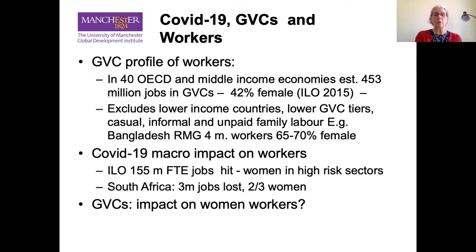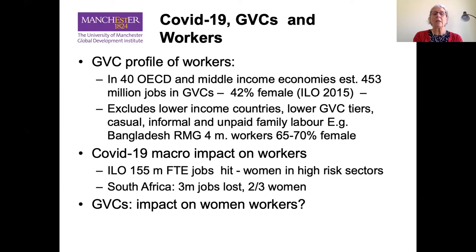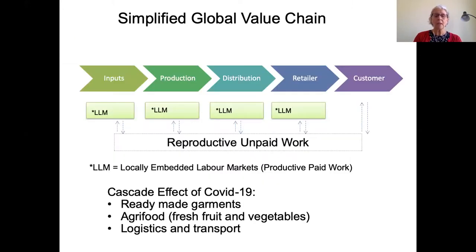COVID has had a big macro impact on workers. The ILO estimates that 155 million full-time equivalent jobs have been affected globally, and that women are particularly in high-risk sectors and are therefore being disproportionately affected. Very recent research from the University of Cape Town shows that nationally in South Africa, 3 million jobs have been lost or directly affected and two-thirds of those — 2 million — are women. But it's very difficult to get data specifically on the impact on women workers given their significant proportion in labour-intensive value chains.